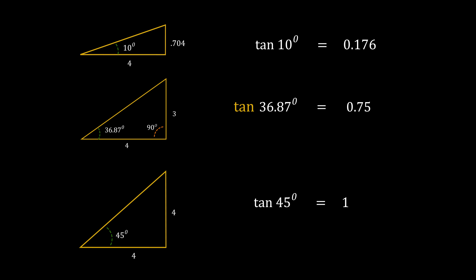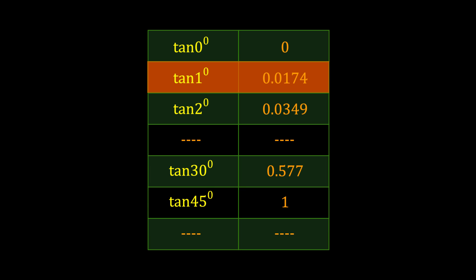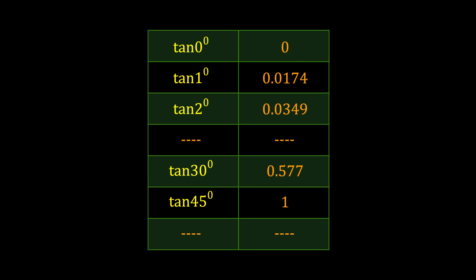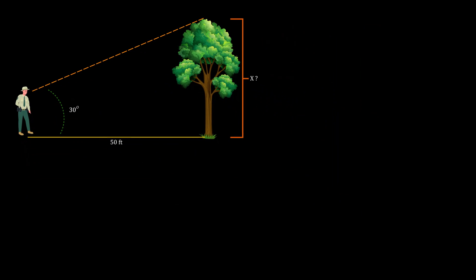It's like a fixed mapping. You can create this kind of mapping table. Tan 1 is 0.0174. This is fixed mapping that exists in nature. If you want to find out tan of any angle, you can go to this website, rapidtables.com. I encourage you to try it out. Try out different angles and you'll find that tan 30 is always 0.577. It's always a fixed mapping.